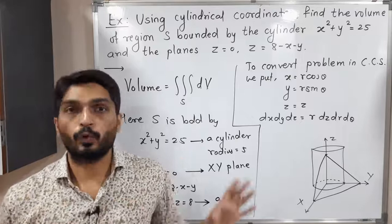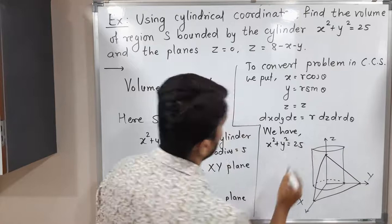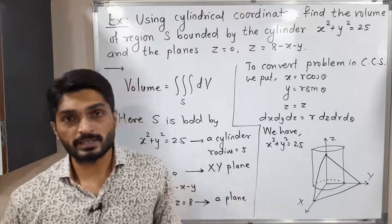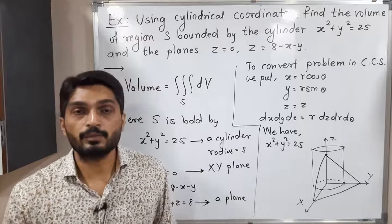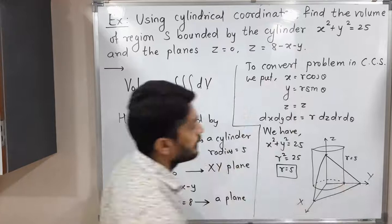Now we convert all equations to cylindrical coordinates. For the cylinder, x² + y² = 25 becomes r² cos²θ + r² sin²θ = 25. Taking r² common and using cos²θ + sin²θ = 1 gives r² = 25, so r = 5. The equation of the cylinder in cylindrical coordinates is r = 5.